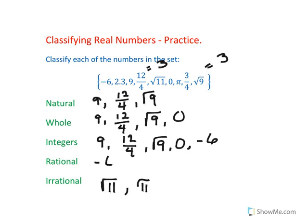So let's list those. We have negative 6, 2.3, 9, 12 over 4, 0, 3 fourths, and the square root of 9.